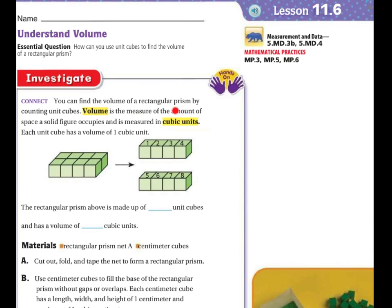Connect. You can find the volume of a rectangular prism by counting the unit cubes. Volume is the measure of the amount of space a solid figure occupies and is measured in cubic units. Each unit cube has a volume of one cubic unit.